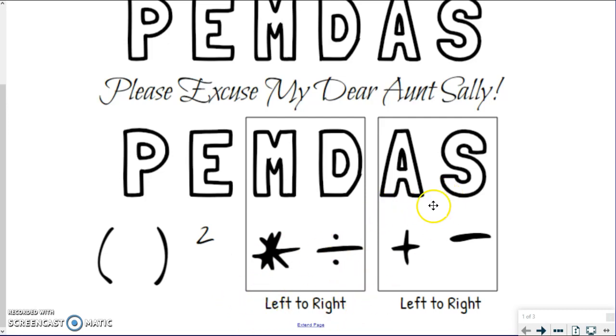The last ones are addition and subtraction, and they're also grouped just like multiplication and division was because, again, you do them left to right. You don't necessarily do addition before subtraction or vice versa. It's whatever happens left to right in the problem. So those are some tips you can use to help remember, but let's go ahead and get started with some practice.